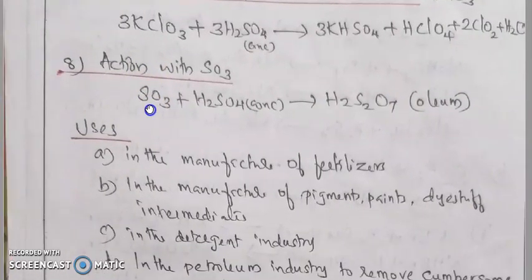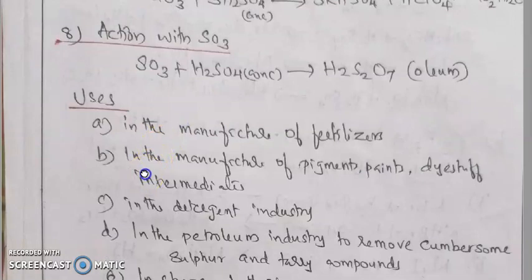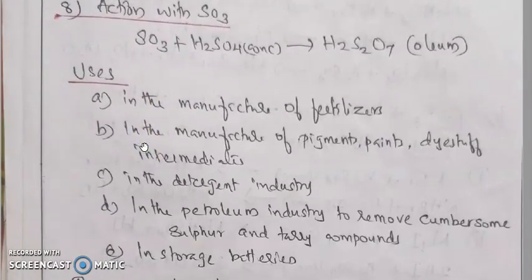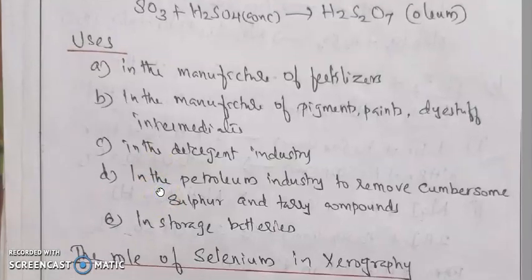Action with SO3: SO3 reacts with sulfuric acid to give oleum, used in the contact process. Uses of sulfuric acid include: manufacture of fertilizers, pigments, paints, dyestuffs, and intermediates; in the detergent industry; in the petroleum industry to remove sulfur and related compounds; in storage batteries; and in water treatment.